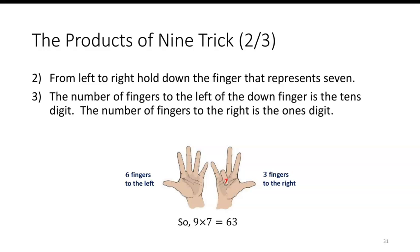From left to right, again, hold down the number that represents the 7. The number of fingers to the left of that down finger is the tens digit. So you can see that if you hold down the 7, there are 6 numbers to the left and 3 numbers to the right. And that tells me 9 times 7 is 63.